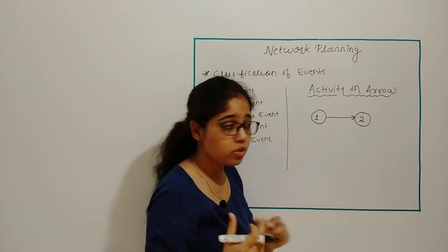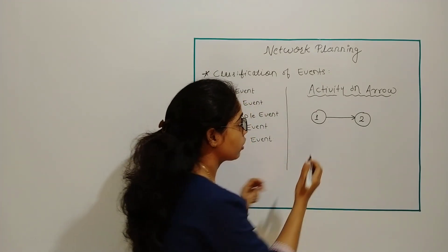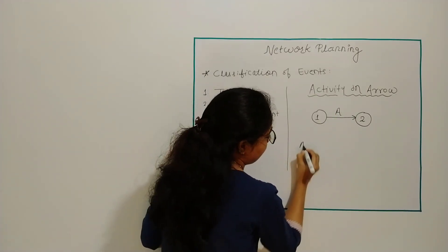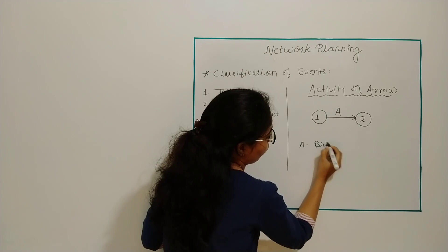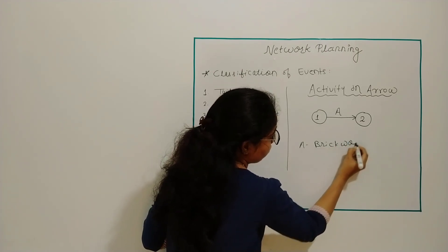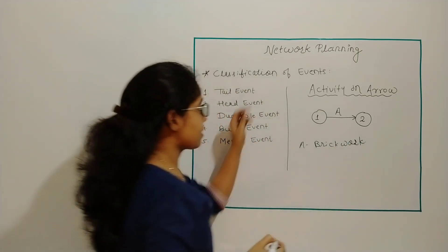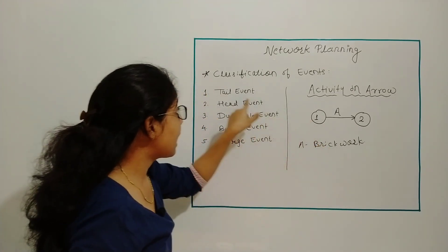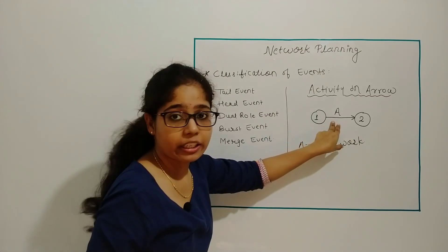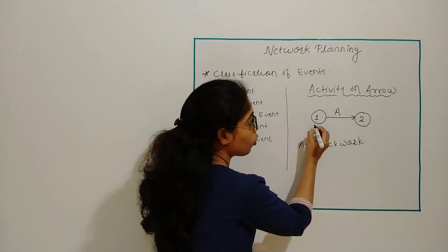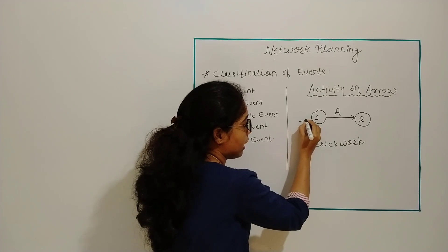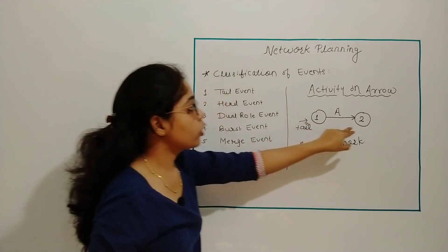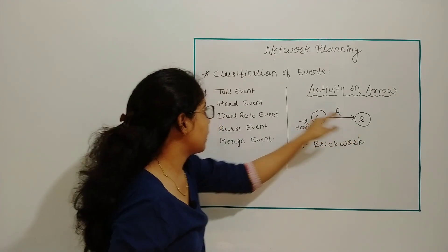Whatever activity comes will come under your activity on arrow. Suppose I am assuming one activity A, let it be brick work. Under classification of events, node 1 will act as tail event of activity A. From node 1 your activity will start, that's why it is called tail event. And node 2 is called head event of activity A.